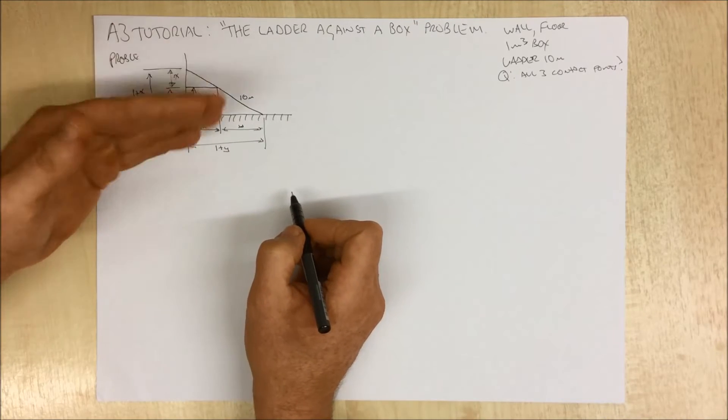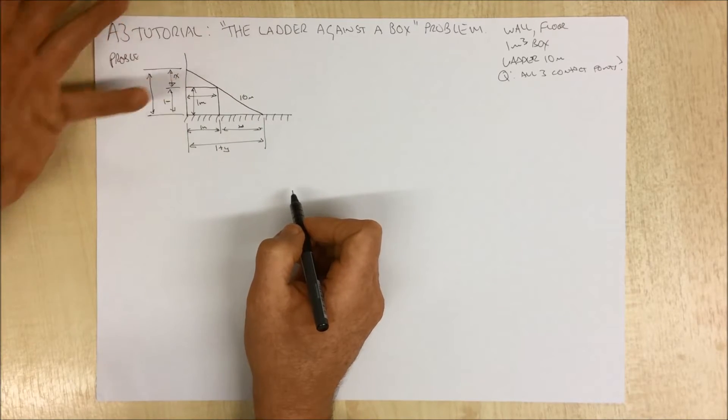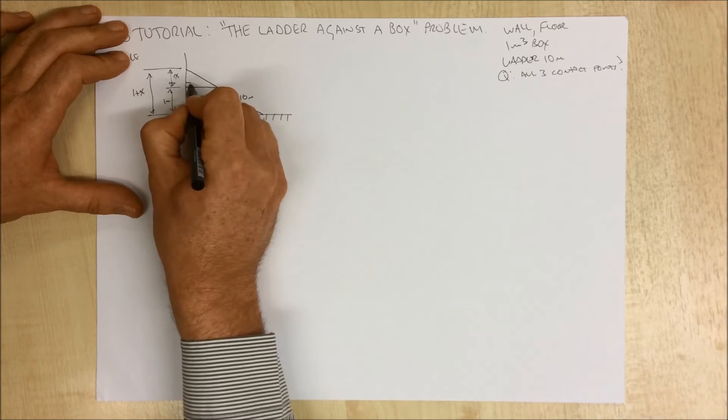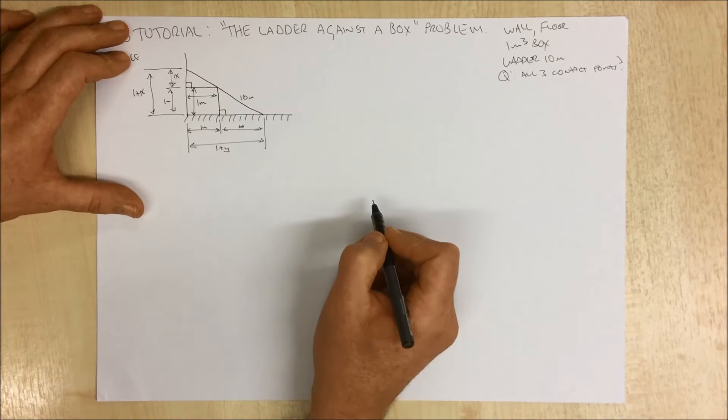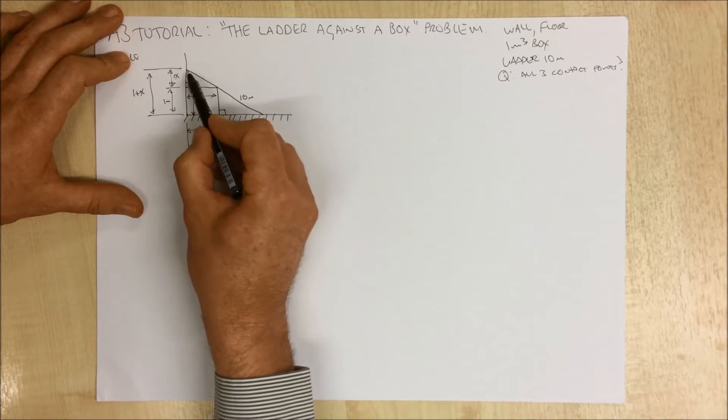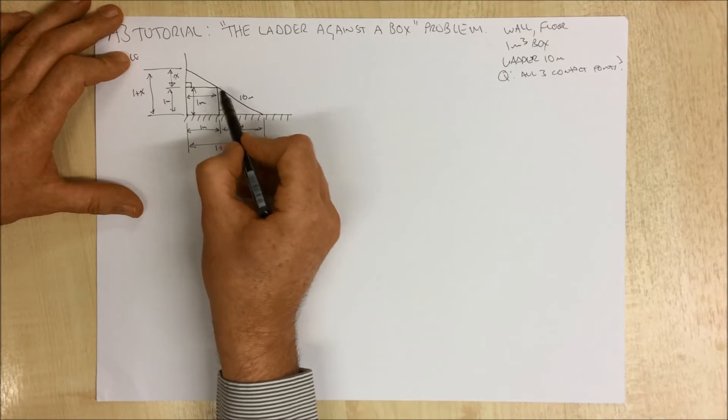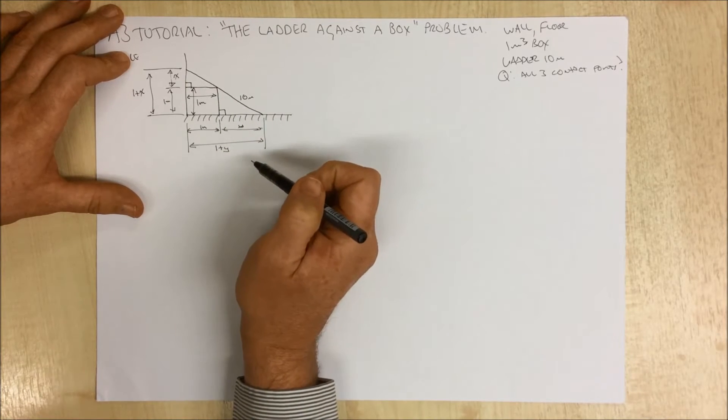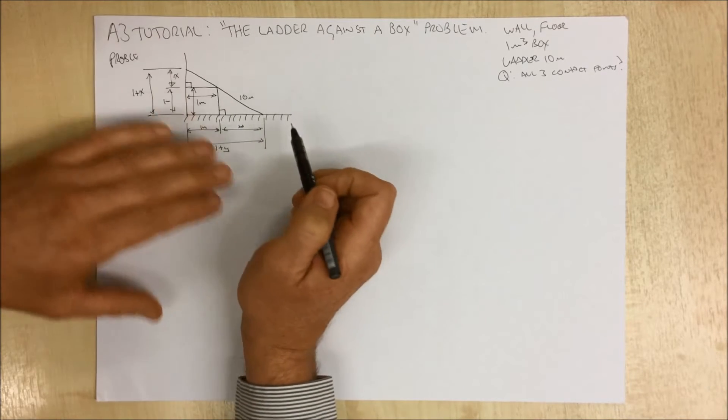Now the next thing we can do is look at this and see that we've got some right angled triangles. Here's one here and here's one here. We don't know what this distance is because we don't know what proportion it is of our 10 meter length.